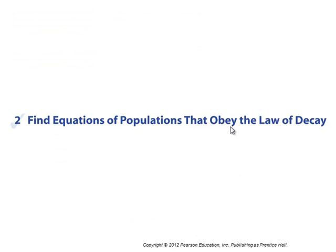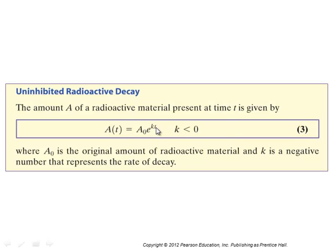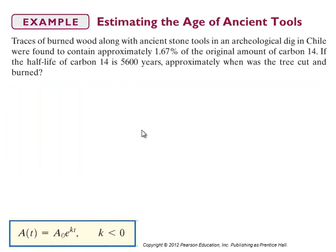Now for equations of populations that obey the law of decay: it's the same form as uninhibited growth except k is going to be negative. A₀ is the initial quantity. Example: traces of burned wood along with ancient stone tools in an archaeological dig in Chile were found to contain approximately 1.67% of the original amount of carbon-14. If the half-life of carbon-14 is 5,700 years, approximately when was the tree cut and burned?